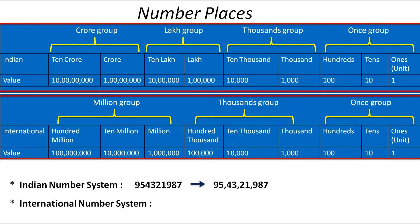Now let's see the International Number System with the same number. We have to put commas after every 3 digits, because in the International Number System each group has 3 places. So the number becomes like this. These 3 digits come in the 1s group, these 3 fall in the thousands group, and these 3 fall in the millions group. So the number name will become 954,321,987.